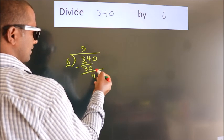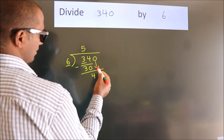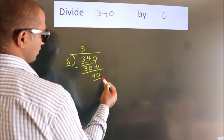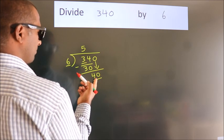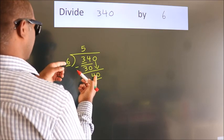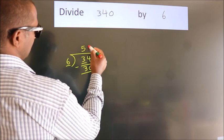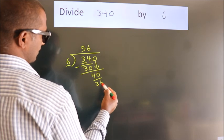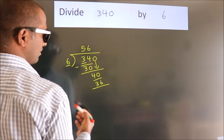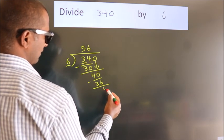After this, bring down the beside number. So 0 down, making 40. A number close to 40 in the sixth table is 6 times 6 equals 36. Now we subtract. We get 4.